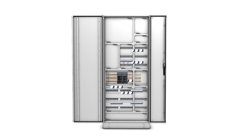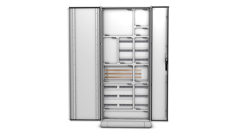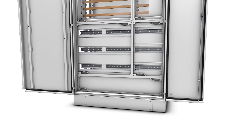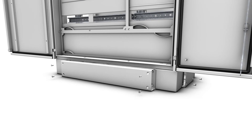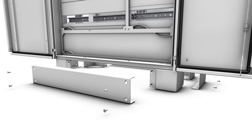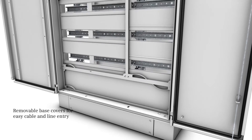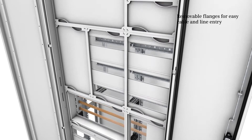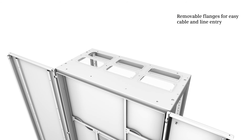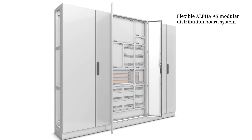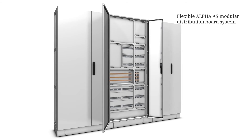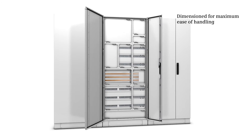Every floor-mounted distribution board features a 100 millimeter high base with removable covers and a two-component flange in the top plate. The flexible Alpha AS modular distribution board system is dimensioned for maximum ease of handling.